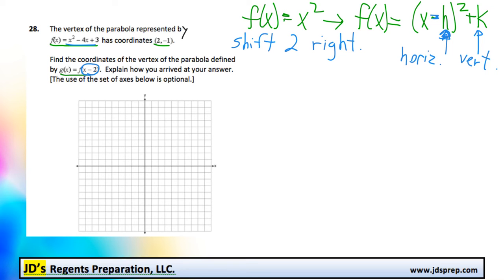And that means the coordinate of the vertex, 2 negative 1, if it moves 2 to the right, then the new point would be 4 negative 1, because the x value is increasing by 2.